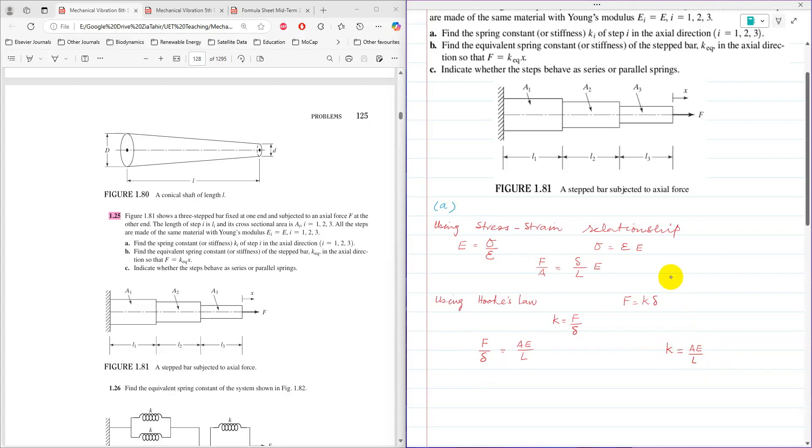And then it can further, now Ki as a generic form is equal to Ai, area of cross-section, times E over Li. So that is the first part: find spring constant Ki of step i in axial direction.